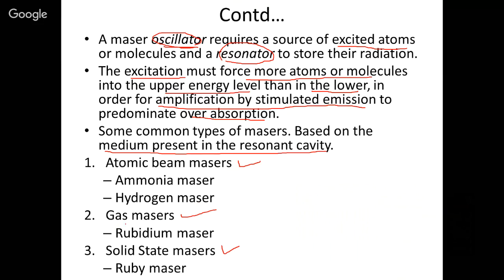Gas MASERs make use of rubidium vapor in a gaseous state to generate electromagnetic radiation through lasing action. The third type is solid state MASER, which includes the ruby MASER using a ruby crystal that generates oscillation when excited.